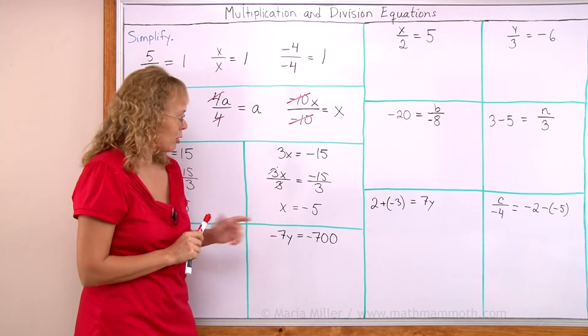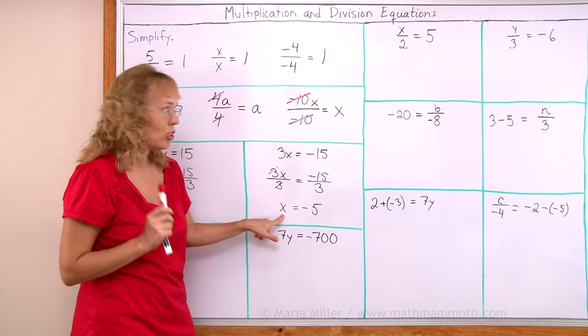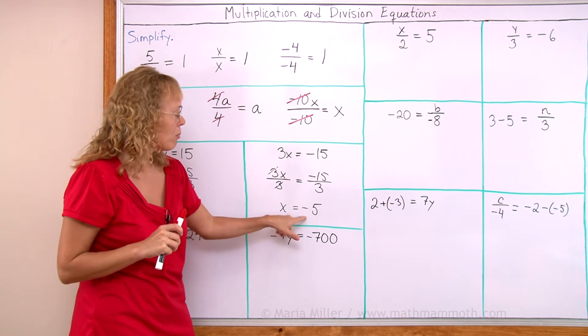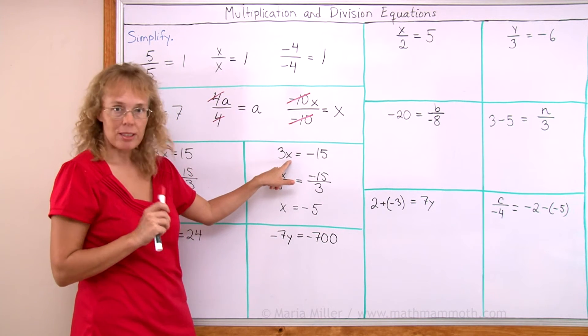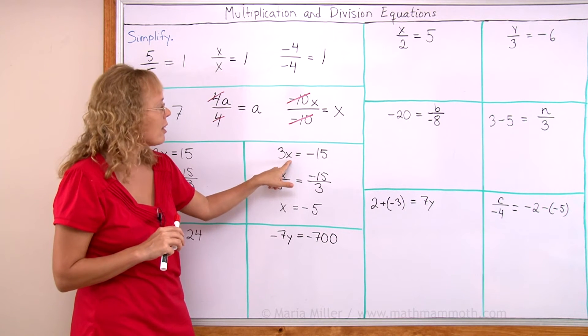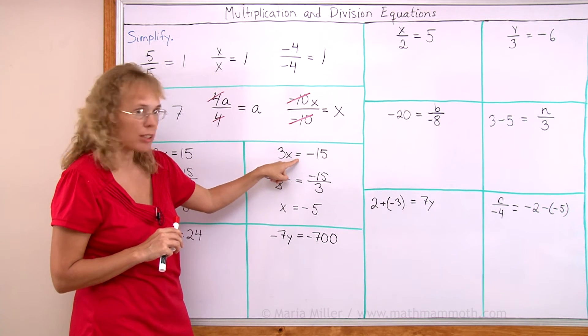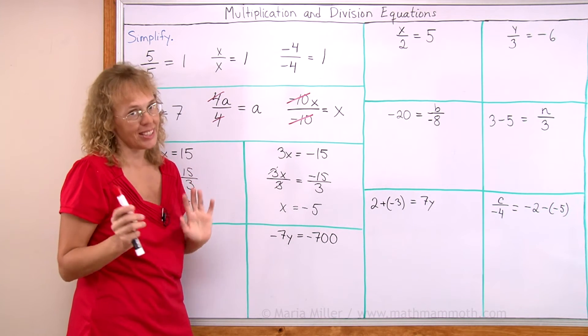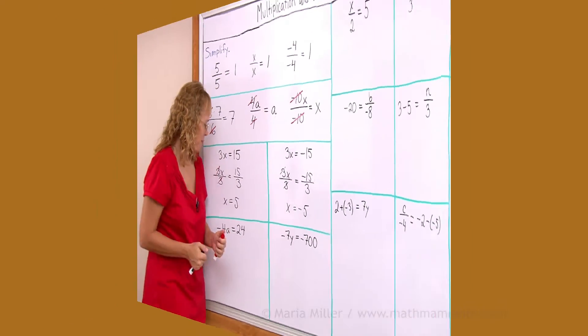Once you get your answer, once you get what x is, then check if that is really true. And put this value over here in place of x. Substitute it there. 3 times minus 5. Is it really negative 15? Yes, it is. So it checks.